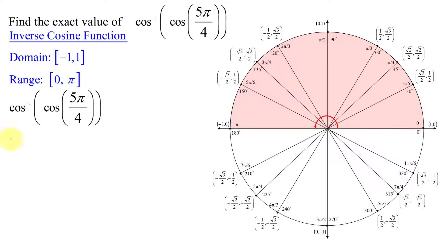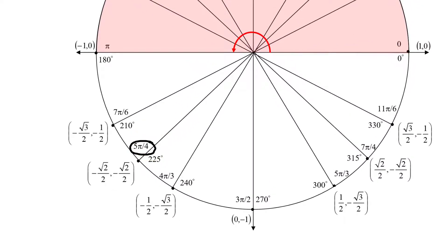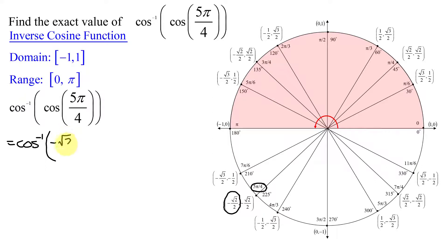So I know 5π over 4 cannot be the answer to this problem. So working this problem, we always start working from the inside out. So I'm going to have the inverse cosine of, what is the cosine of 5π over 4? Here's 5π over 4. And remember the cosine is the x-coordinate of this point. So it's going to equal negative the square root of 2 over 2.